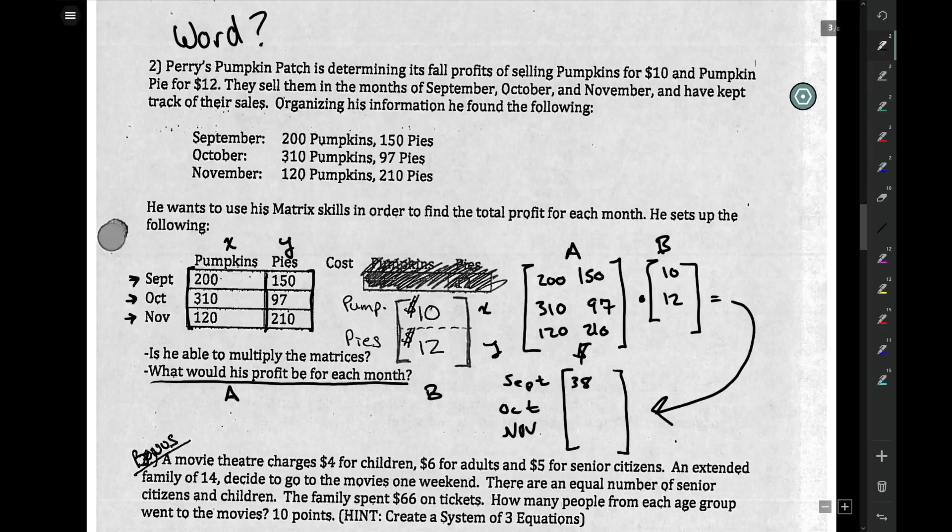And if you do that, you'll have his profit for September, October, and November. So all that just means that he makes in September $3,800, in October $4,264, and November $3,720. That's really it.